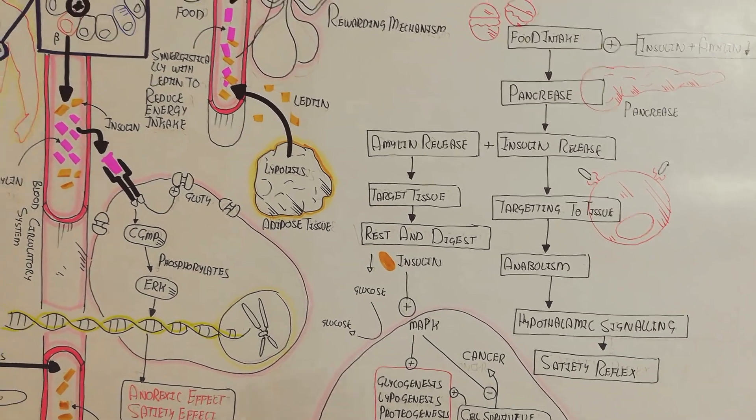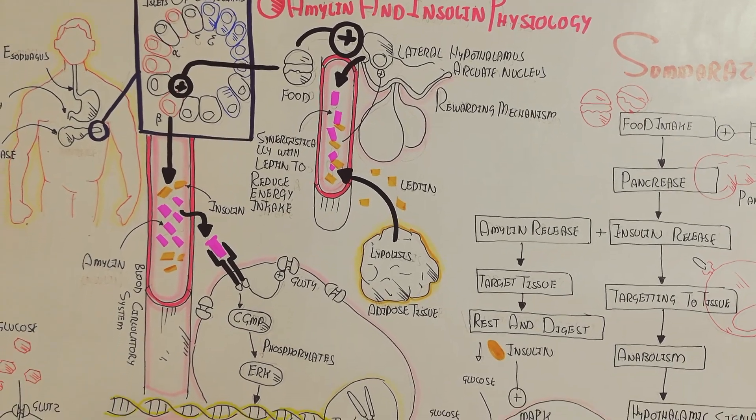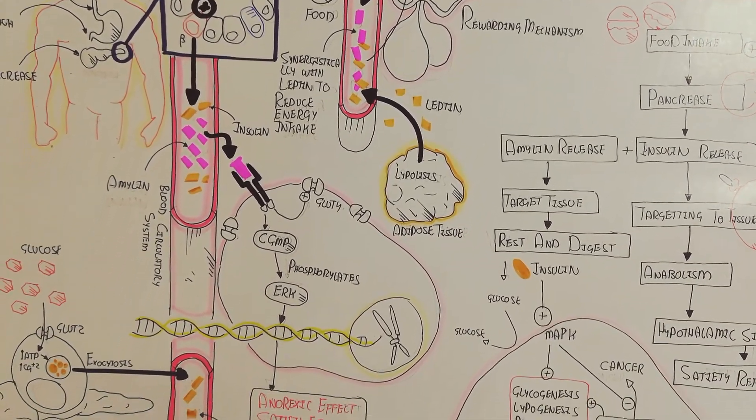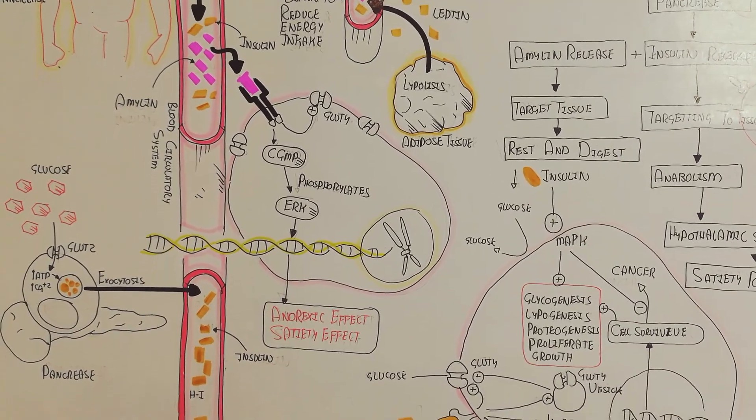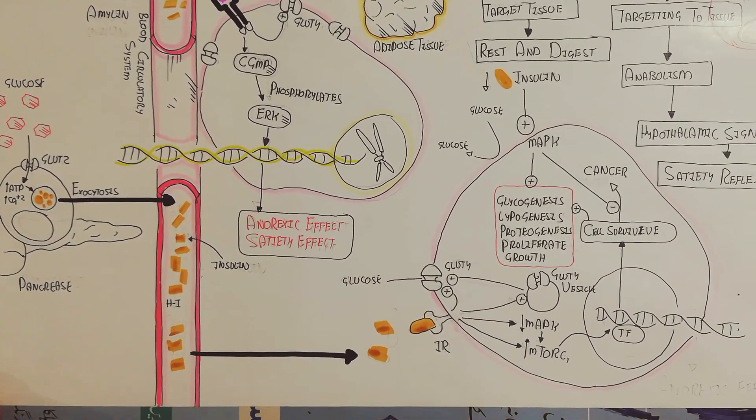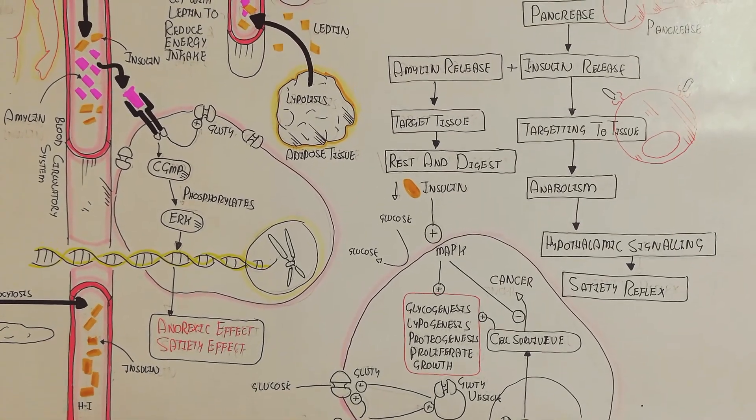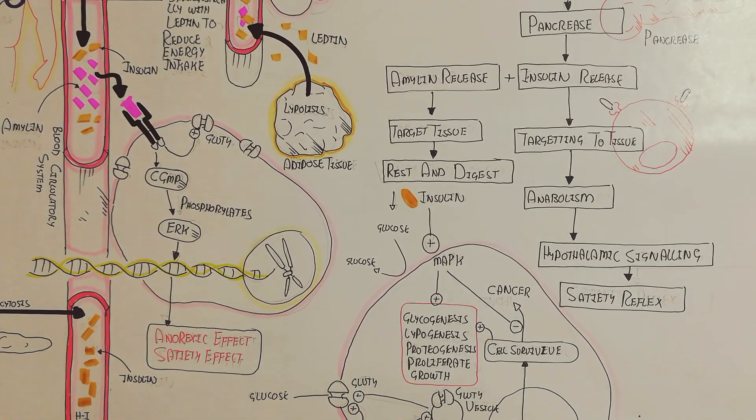I hope you understand amylin and insulin physiology. In this video we discussed how amylin and insulin work and how they produce satiety and anorexic effects through activation and release due to glucose increase in the blood. Thanks for watching, please subscribe, like, and share.